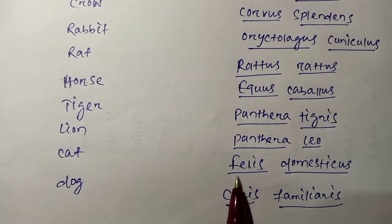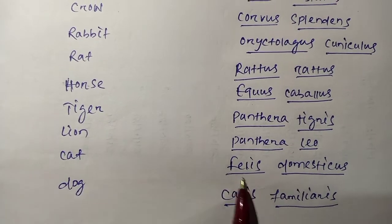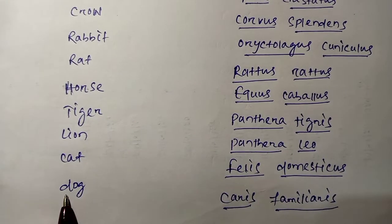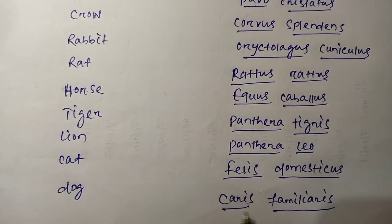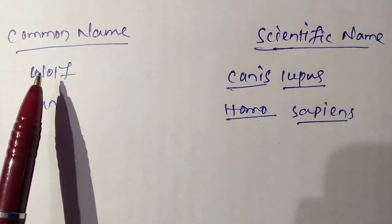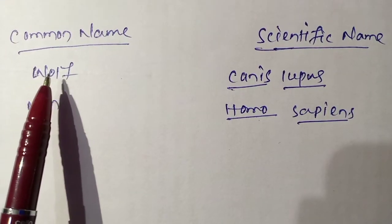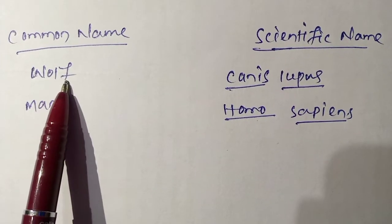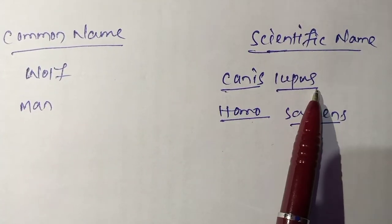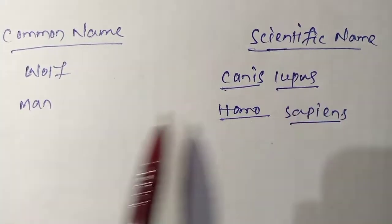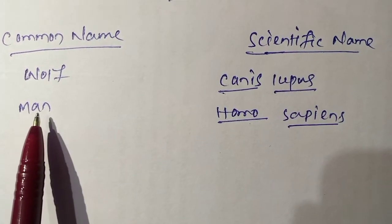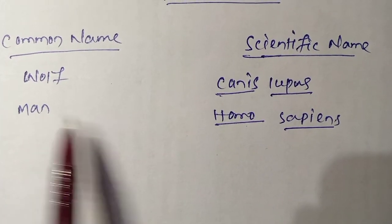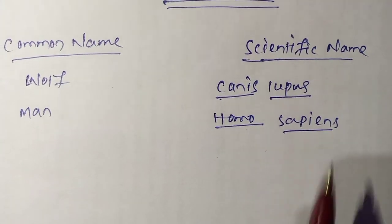Next is Cat. The scientific name is Felis domesticus. Next is Dog. The scientific name is Canis familiaris. Next is Wolf. The scientific name is Canis lupus. Next is Man. The scientific name or zoological name is Homo sapiens.